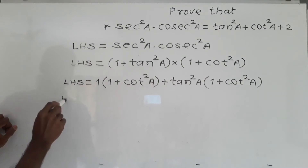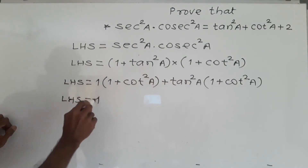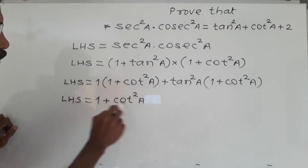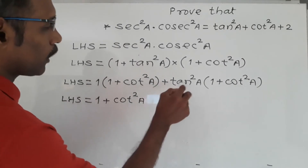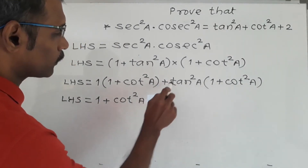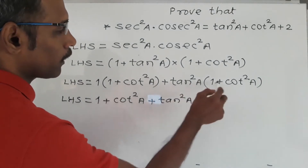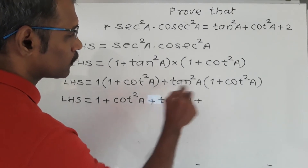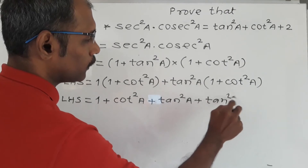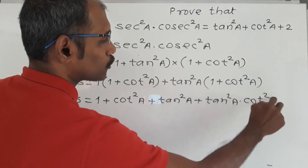Now here multiplication: LHS is equal to 1 into 1 plus 1 into cot square A, which gives cot square A. Then I will multiply the bracket by tan square A, giving tan square A into 1 means tan square A, plus tan square A into cot square A. This is our multiplication of these two brackets.